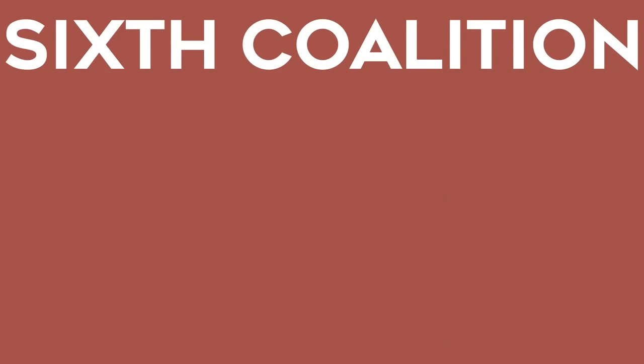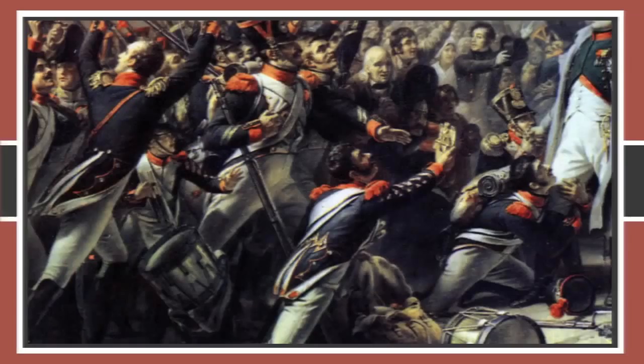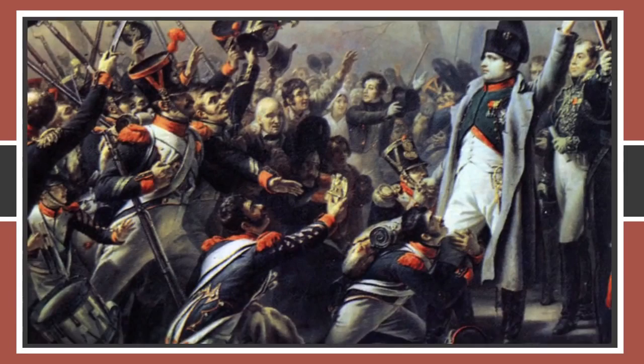The Sixth Coalition was formed and Napoleon was defeated at Leipzig in 1813, and the coalition's forces pushed into Paris. Napoleon was exiled to an island near Italy, but he escaped. He returned and amassed an army of loyal supporters. French armies would be sent to apprehend him, but they refused and defected upon witnessing him. The Seventh Coalition was formed in response.